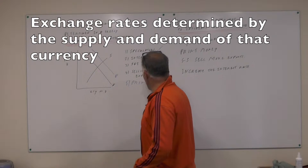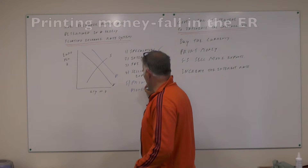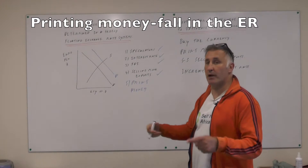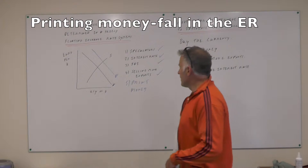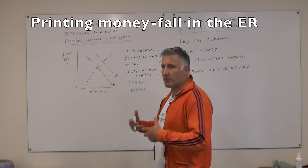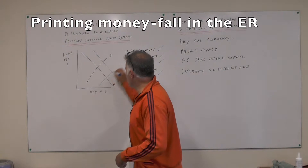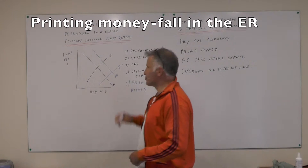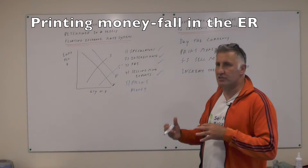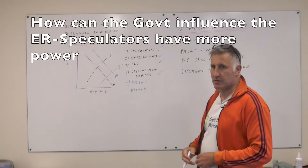I've also missed off here: if you print money — or rather, electronically create money — then speculators will think your currency is not going to be worth as much. So therefore they will sell sterling. So the exchange rate is determined by lots and lots of different factors.